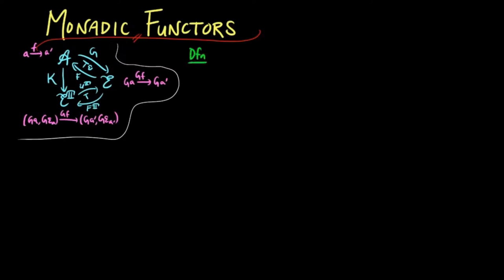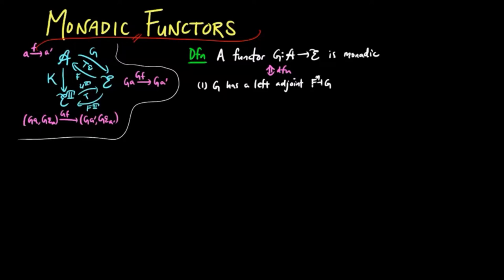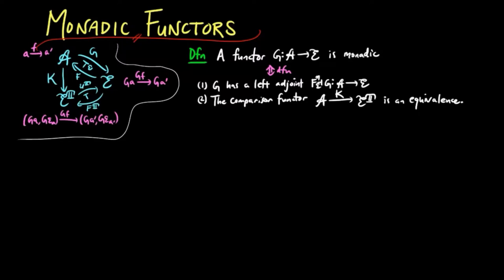We then define that a functor G is monadic if and only if: (1) G has a left adjoint F, and (2) the comparison functor K is an equivalence of categories, where the monad T is that induced by the adjoint situation in (1). We then can prove the following properties for a monadic functor.